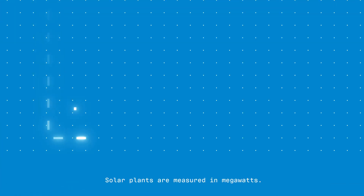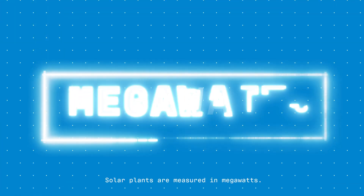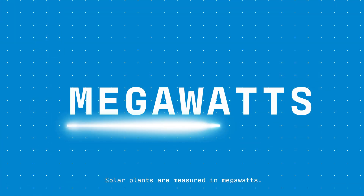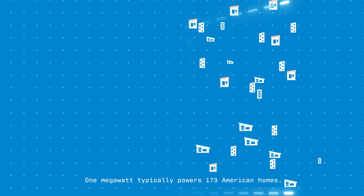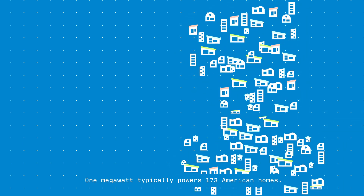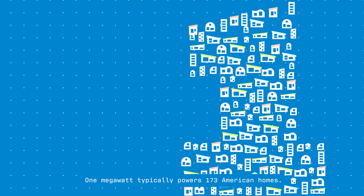Solar plants are measured in megawatts. One megawatt typically powers 173 American homes.